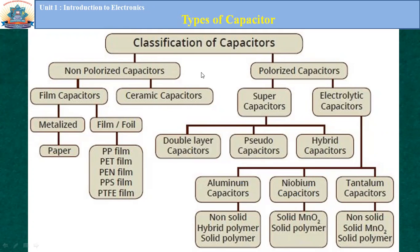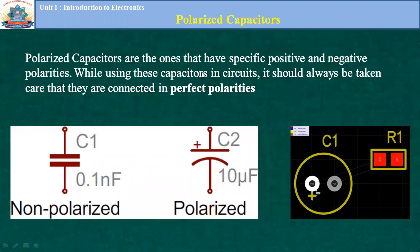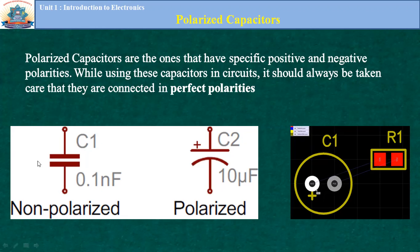Let us see what is meant by polarized and non-polarized capacitors. This is the symbol of a non-polarized capacitor and this is the symbol of a polarized capacitor. In the case of a non-polarized capacitor, any terminal can be connected to any power supply. But in the case of a polarized capacitor, the positive terminal has to be connected to the positive power supply.